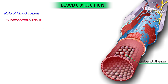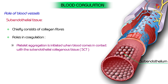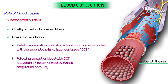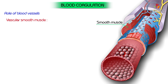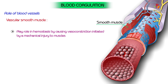Subendothelial tissue, which chiefly consists of collagen fibers, plays the following roles: platelet aggregation is initiated when blood comes in contact with subendothelial collagenous tissue; the intrinsic coagulation pathway is initiated when factor 12 is activated following contact of blood with subendothelial collagenous tissue. Vascular smooth muscle: smooth muscles of the vascular wall play a role in hemostasis by causing vasoconstriction initiated by mechanical injury.